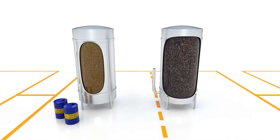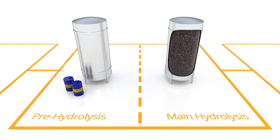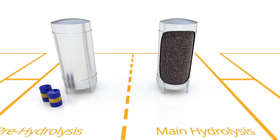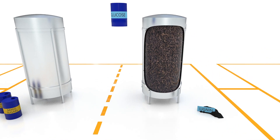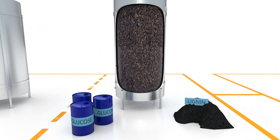Now that we have extracted the mixed sugar stream, let's take a look at the main hydrolysis. In the main hydrolysis, we convert wood cellulose into a glucose stream which flows out of the reactor. All that remains is a clean lignin product.